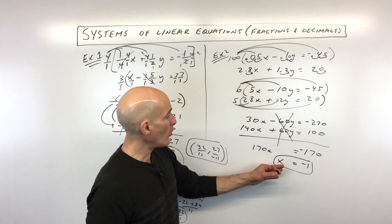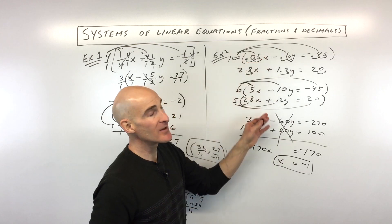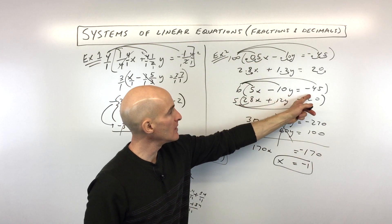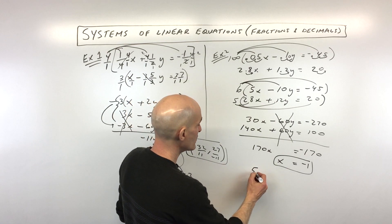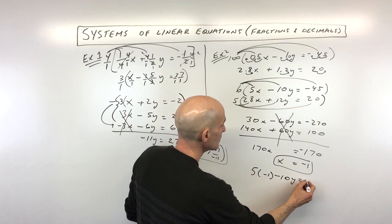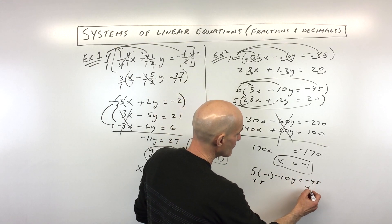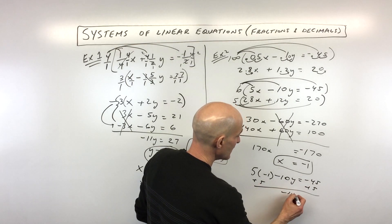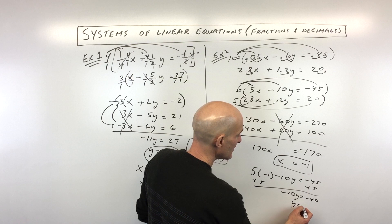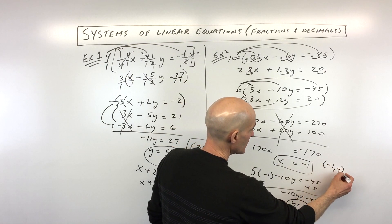All we have to do to solve for y is put x equals negative 1 back into any one of the equations — it doesn't matter which one. Let's use the one with smaller numbers: 5 times negative 1 minus 10y equals negative 45. That's a negative 5, so I'm going to do the opposite and add 5 to both sides. That comes out to negative 10y equals negative 40. Divide both sides by negative 10 — that gives us y equals positive 4. So our answer is negative 1 comma 4.